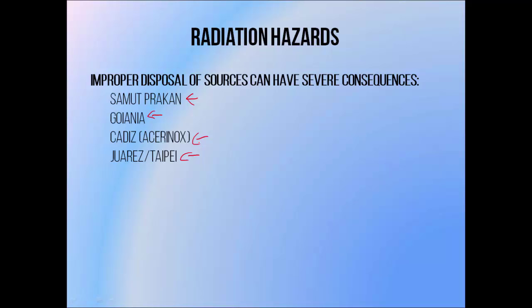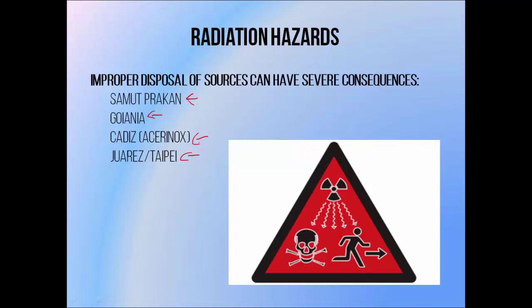Hazards like these can be avoided by properly keeping track of sources, or by using machines that don't contain radioactive material. Incidents like these prompted the development of a new radiation warning sign to be placed inside these units, which better encompasses the danger associated with taking them apart.